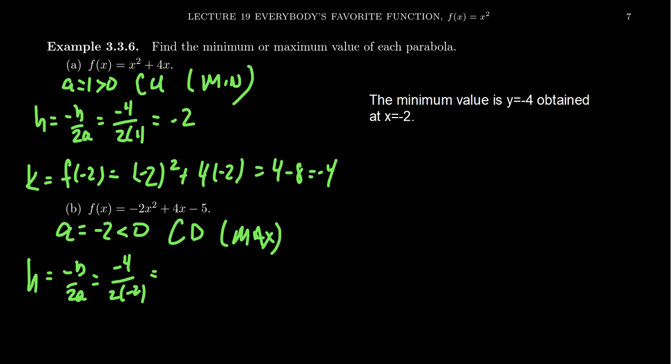This tells us that the vertex, the x coordinate is going to be just a positive 1, negative 4 divided by 4 there. And so then k will be f of 1, which is equal to negative 2 plus 4 minus 5. Notice 4 minus 5 is negative 1, minus 2 is going to be negative 3. And so that then finishes it up for us. What we see here is that the maximum value is going to be y equals negative 3 obtained at the value x equals 1.